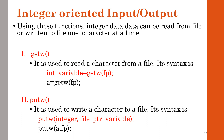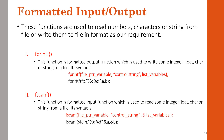For integer data, getw reads an integer from a file and putw writes an integer to a file, with the file pointer specified. putw takes the integer variable as the first parameter and the file pointer as the second parameter. For formatted input-output, fscanf and fprintf are used. fscanf reads formatted data — first parameter is file pointer, second is control string, then list of variables. fprintf writes formatted data similarly.